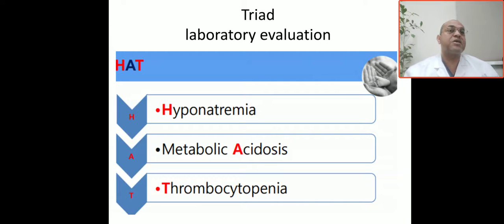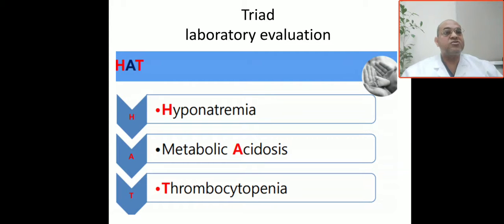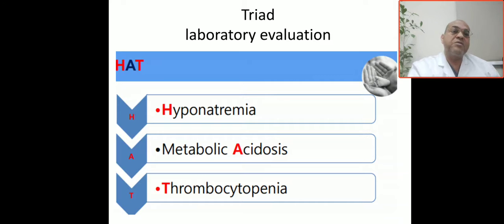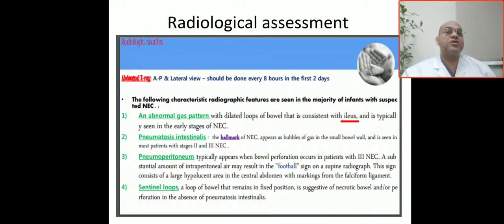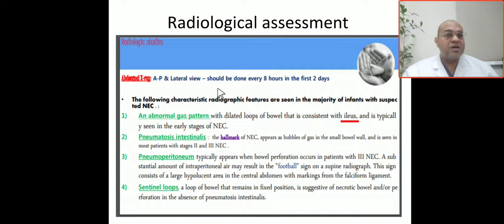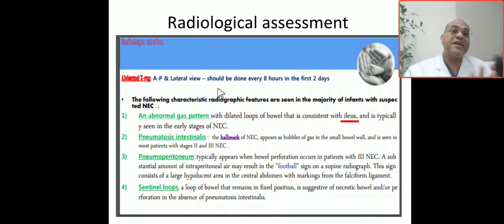This is the laboratory evaluation. Necrotizing enterocolitis has clinical, laboratory, and radiological manifestations. Clinical GI symptoms include abdominal distension, bilious gastric aspirate, and constipation. Systemic manifestations include hemodynamic instability, hyponatremia, metabolic acidosis, and thrombocytopenia. Any patient suspected of NEC should have AP and lateral X-rays every eight hours in the first two days, and monitoring every 8-12 hours clinically, biochemically, and radiologically.